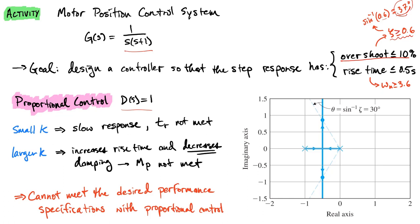That describes a cone in the complex plane. For the rise time criterion — less than 0.5 seconds — the calculation tells us that the distance from the origin to the closed loop poles needs to be greater than 3.6 radians per second. If we sketch the root locus for this open loop transfer function with a constant proportional controller, we have open loop poles at zero and minus one. When the gain is very small, these poles haven't moved far, so the distance from the origin is quite small.